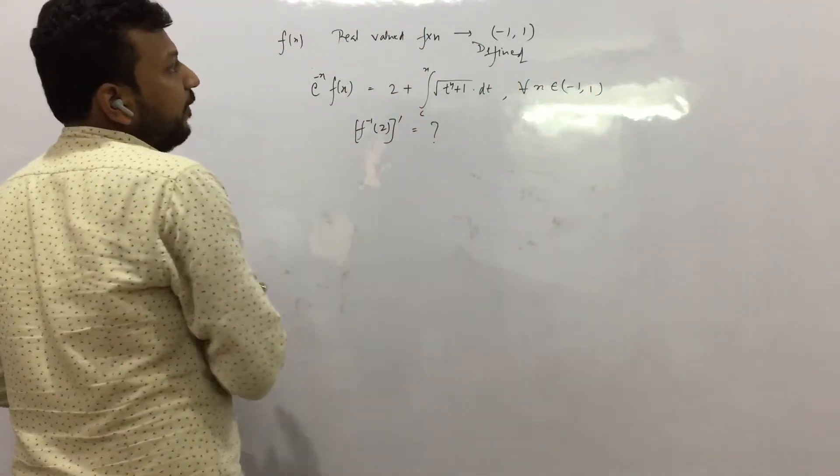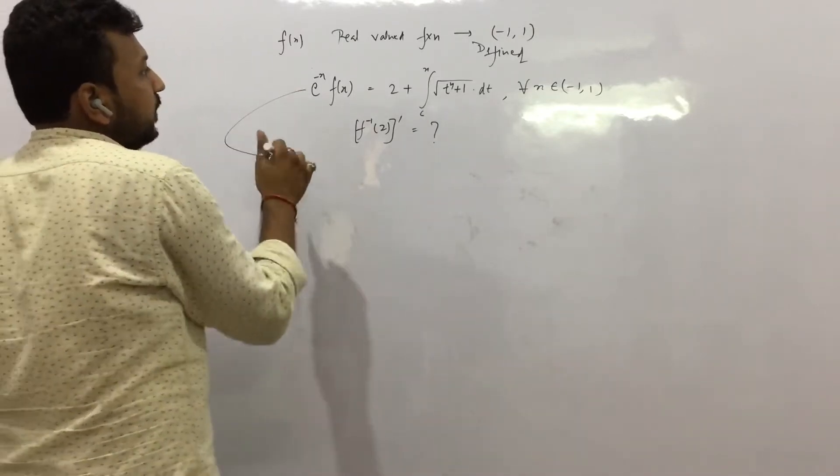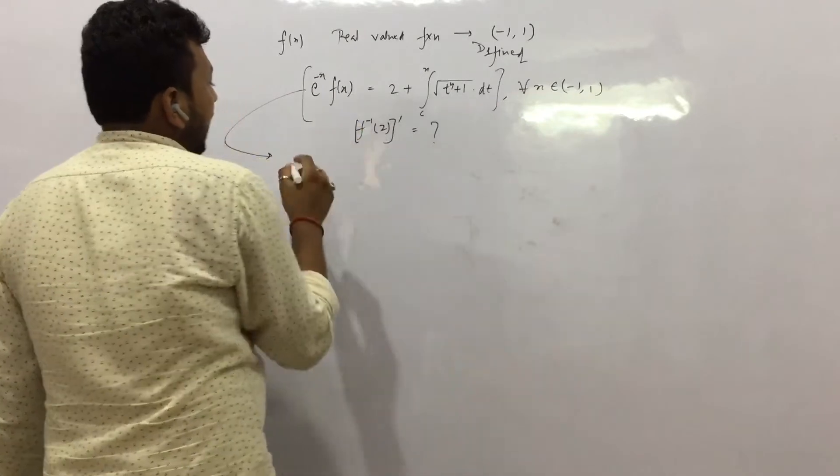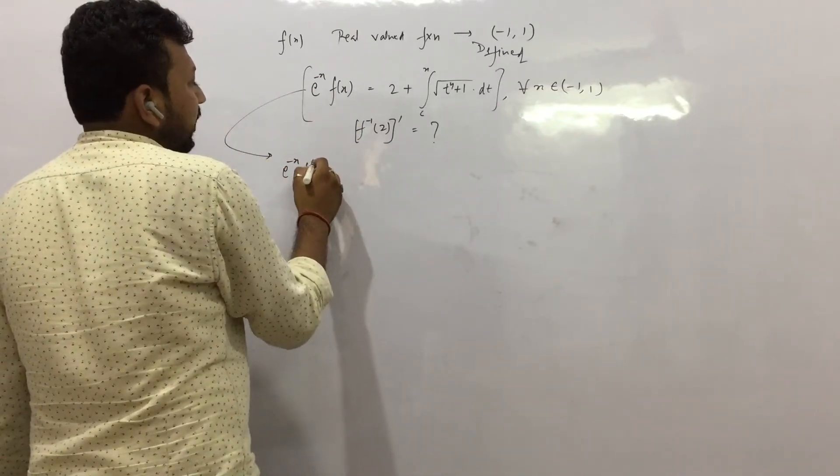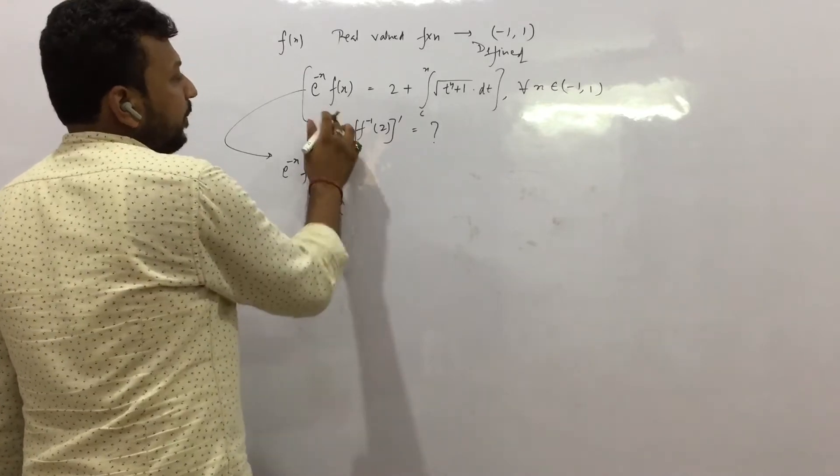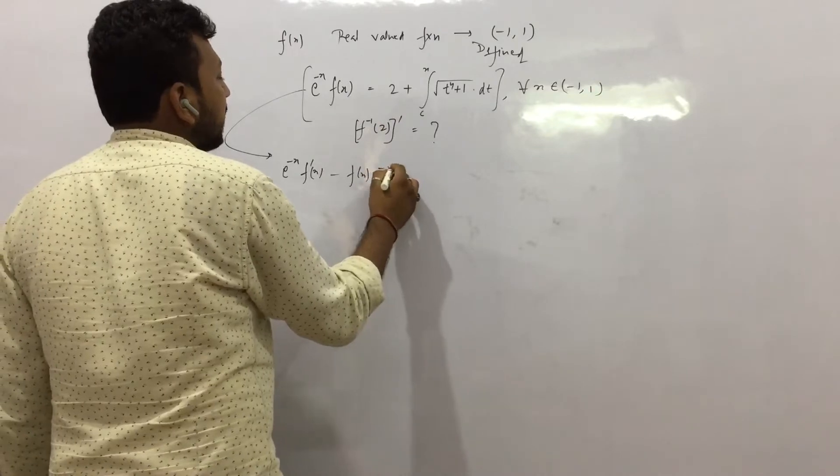This is the equation that we have to use. Now what we will do is take the derivative of this thing. What do we have? e to the power minus x into f(x), f dash x - product rule we are applying - plus f(x) into derivative of e to the power minus x, that is minus e to the power minus x.